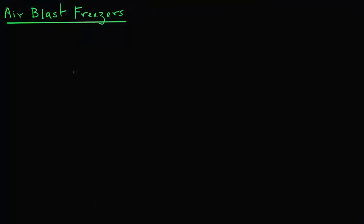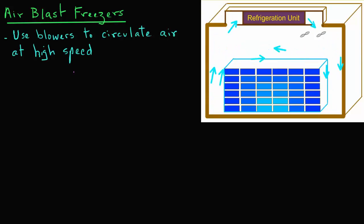Air blast freezers involve using rooms with blowers to circulate air at high speed, typically 1 to 5 meters per second around the product.